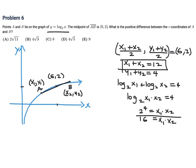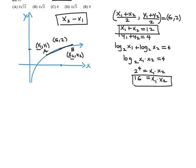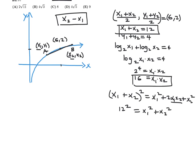What are we trying to figure out? The positive difference between the x-coordinates, so x₂ minus x₁. I'll expand (x₁ + x₂)² = x₁² + 2x₁x₂ + x₂² — that's 12 squared, which is 144. And 2 times x₁x₂ is 2 times 16, which is 32. So x₁² + x₂² equals 144 minus 32, which is 112.